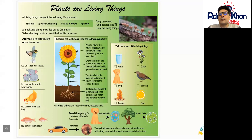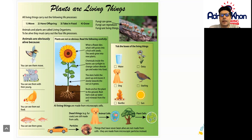Hello and welcome to this comprehension exercise for Key Stage 3. Let's have a read of this particular text together. So plants are living things. All living things carry out the following life processes.